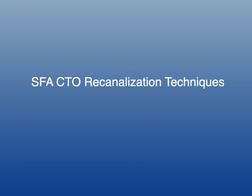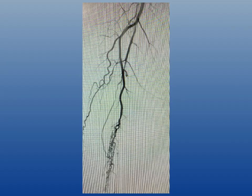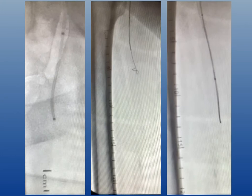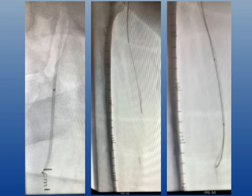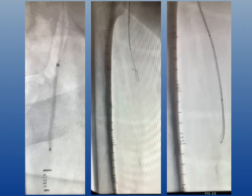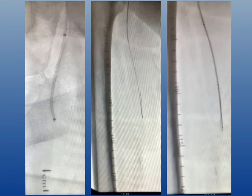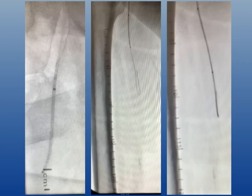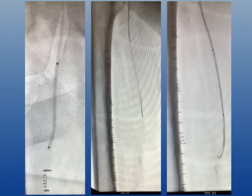There are numerous recanalization techniques when dealing with CTOs. Here's an example of an SFA CTO that I needed to cross using three different techniques. On the far left, I'm using a four French Navi Cross catheter by Terumo — rotating and advancing the catheter and using tactile sense to determine whether I'm still within the CTO and have not perforated out of the artery. This is called navi bossing.